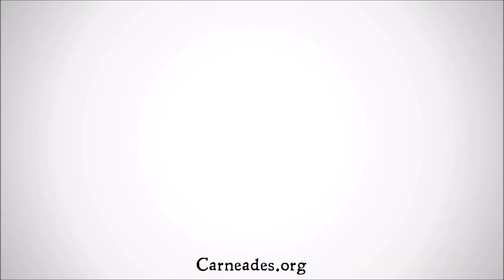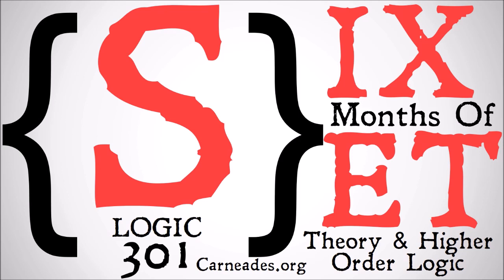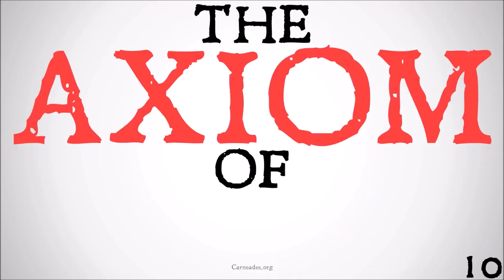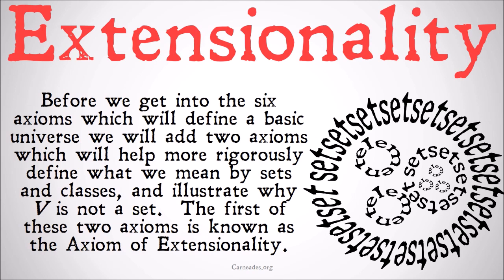Welcome back to carneades.org. Today we're going to be continuing with our series, six months of set theory and higher order logic. In this video we're going to be looking at the axiom of extensionality. Before we get into the six axioms which will define a basic universe, we will add two axioms which will help more rigorously define what we mean by sets and classes, and illustrate why V, the universal class, is not a set. The first of these two axioms is known as the axiom of extensionality.